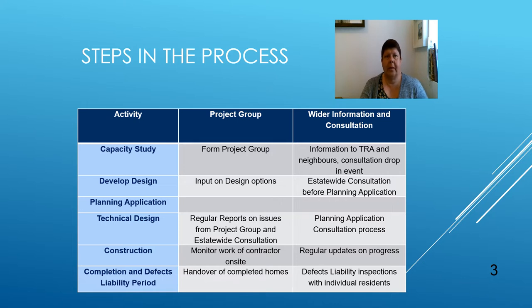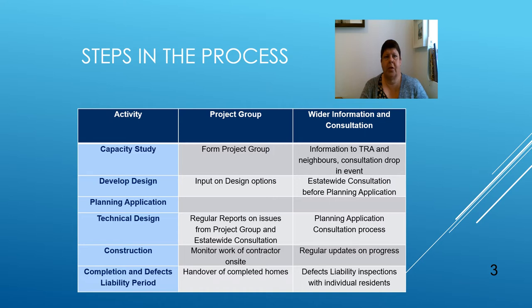Before any construction is to begin, the council will have to enter into a contract with the builder, either through a tender and bidding process or by using a builder on an existing long-term contract that has already been through a tender process. This is to check that the chosen builders have the skills and experience to build on part of an existing estate surrounded by residents, and can build to the required quality at a reasonable price. During the construction stage, some of the work of the new homes project group will be to meet regularly with the council and the builder to monitor the work of the contractors, identify any issues for residents, and work with the council and contractor in resolving any problems.